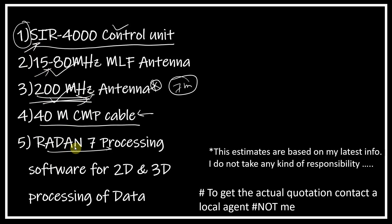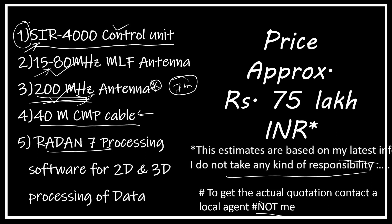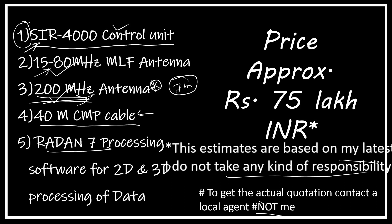All of these main components together — the SIR 4000, MLF antenna, 200 MHz antenna, 40-meter CMP cable, RADAN 7 software, and other accessories — will cost around 75 lakh Indian rupees including tax. This estimate is based on my latest information, but I take no responsibility for accuracy, so please contact a local agent who can provide this system. I've focused on GSSI as that's what I prefer. If you know of other good GPR systems, write their names in the comments and I'll research and upload a video about them.